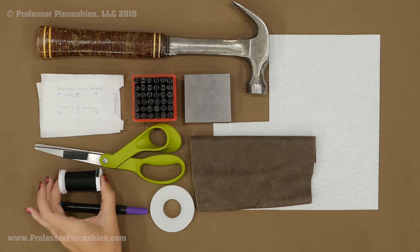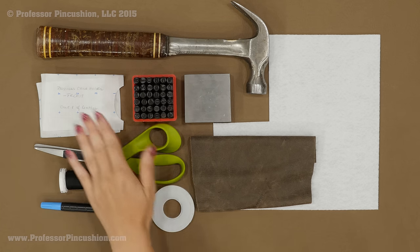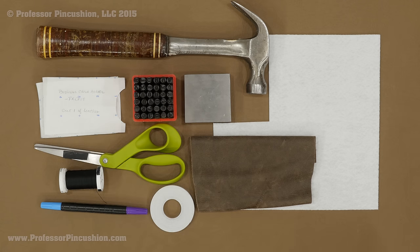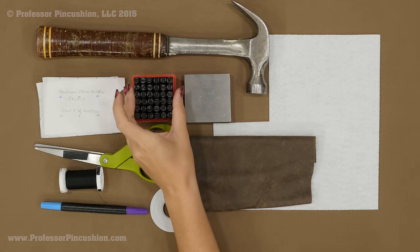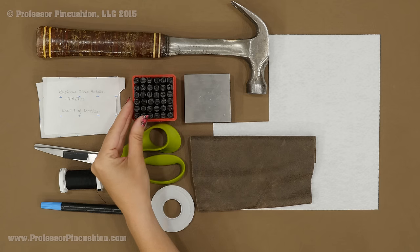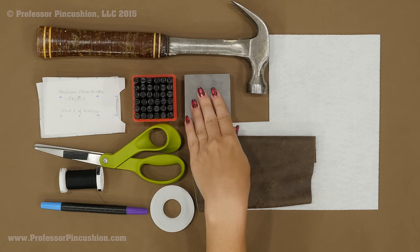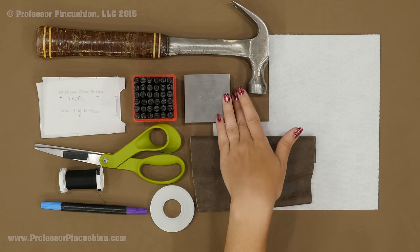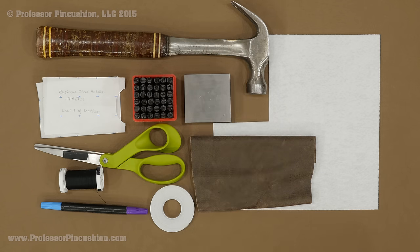Fabric marker, some all-purpose thread, some sewing scissors, and pattern pieces which are available for download. And as an option, if you want to embellish like I do, you have your metal stamp kit. These are letters and numbers. They come in different sizes. I'm using the quarter inch, a steel stamping block or just something underneath that's really strong. You don't really want to just have your table underneath. And then a hammer.